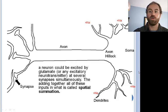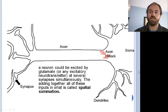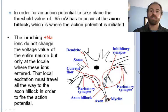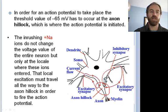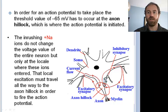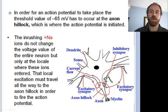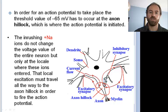A neuron could be excited by glutamate or any other excitatory neurotransmitter at several synapses simultaneously. The adding together of all of these inputs is what is called spatial summation. In order for an action potential to take place, the threshold value of negative 65 millivolts has to occur at the axon hillock, which is where the action potential is initiated. The inrushing sodium ions do not change the voltage value of the entire neuron, but only at the locale where these ions entered. That local excitation must travel all the way to the axon hillock in order to fire the action potential.